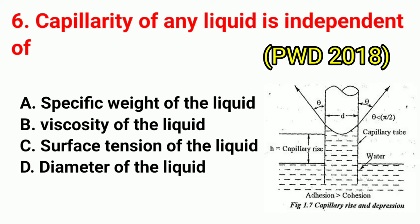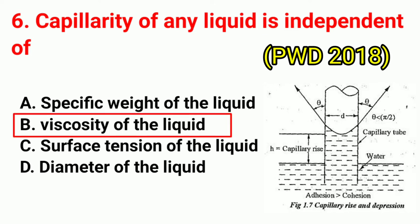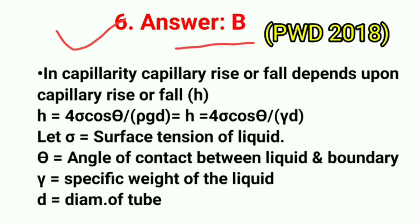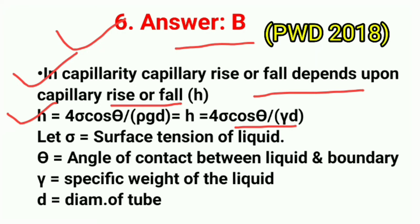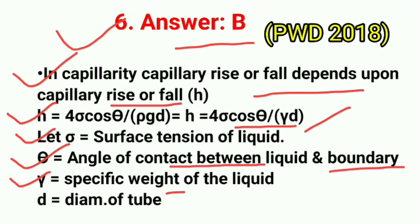Question No. 6. Capillarity of any liquid is independent of? Correct answer is option B: viscosity of the liquid. In capillarity, the capillary rise or fall H is given by H = 4σ cosθ / (ρgD) = 4σ cosθ / (γD), where σ is surface tension, θ is angle of contact between liquid and boundary, γ is specific weight of liquid, and D is the diameter of tube. So capillarity is independent of viscosity.